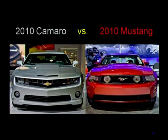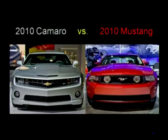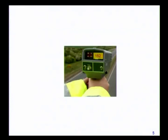Whenever we compare speeds, the most fascinating debate is perhaps between a Camaro and a Mustang — young people always want to know which muscle car goes faster, which gets from 0 to 100 in the least time. When we talk about speed, we need to measure it — and here you have a speed gun with which you are measuring the speed of a car.